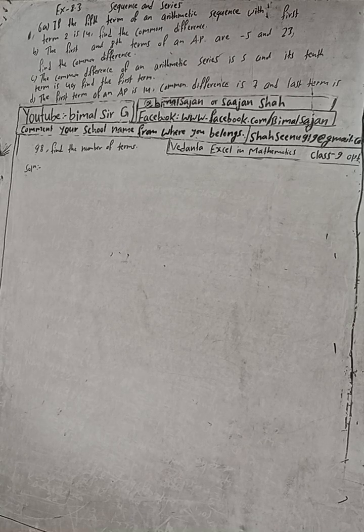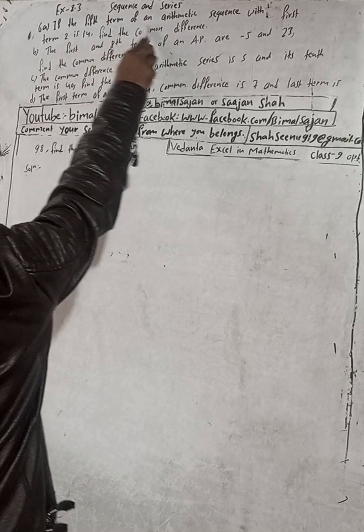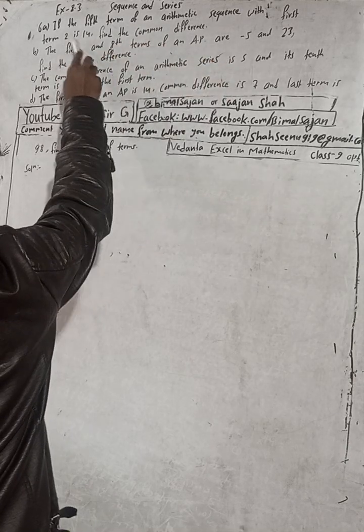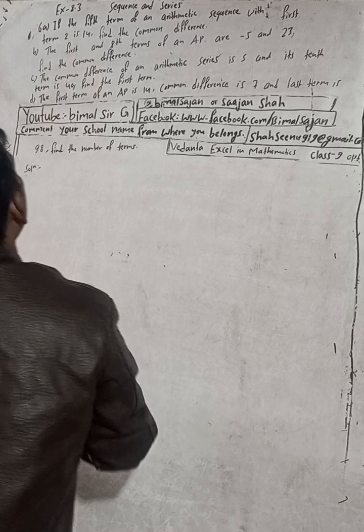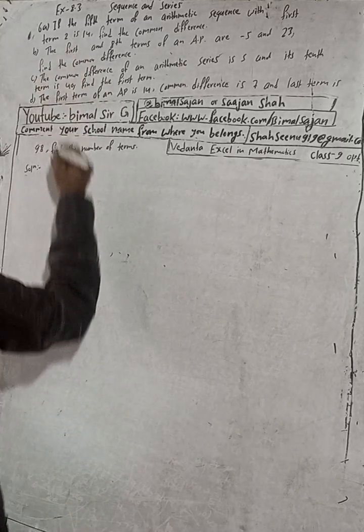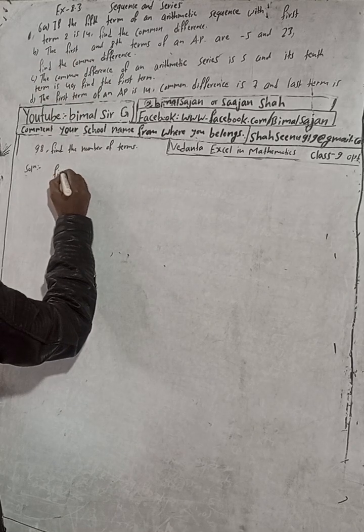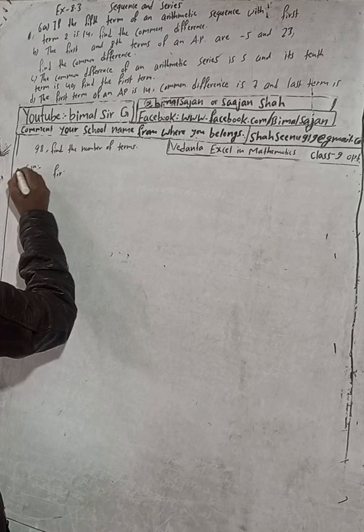Hi Class 9 and 10 students, welcome back to Vimal Sarji YouTube channel. This is Question Number 6, Exercise 8.3 — Sequence and Series, Class 9, Vedant Excel in Mathematics. The question is: if the fifth term of an arithmetic sequence with first term 2 is 14. This is the solution of part 6A.